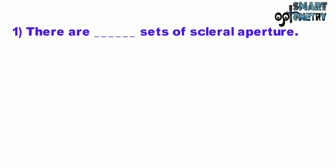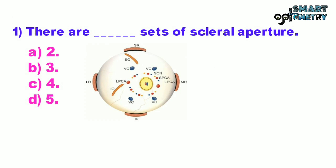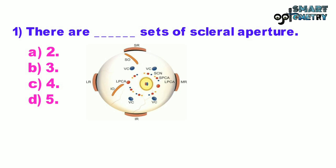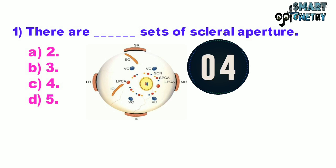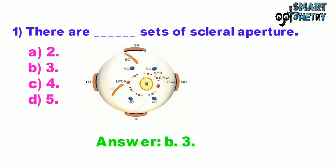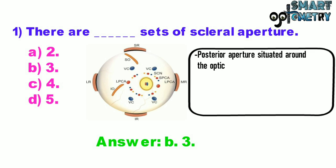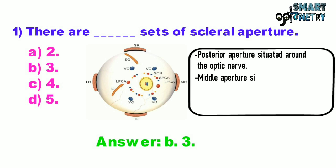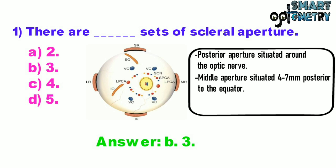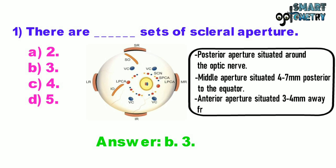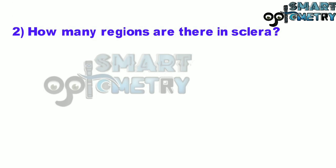Question number one: there are how many sets of scleral aperture? A: 2, B: 3, C: 4, D: 5. There are three sets of scleral aperture: posterior aperture situated around the optic nerve, middle aperture situated 4 to 7 mm posterior to the equator, and anterior aperture situated 3 to 4 mm away from the limbus.